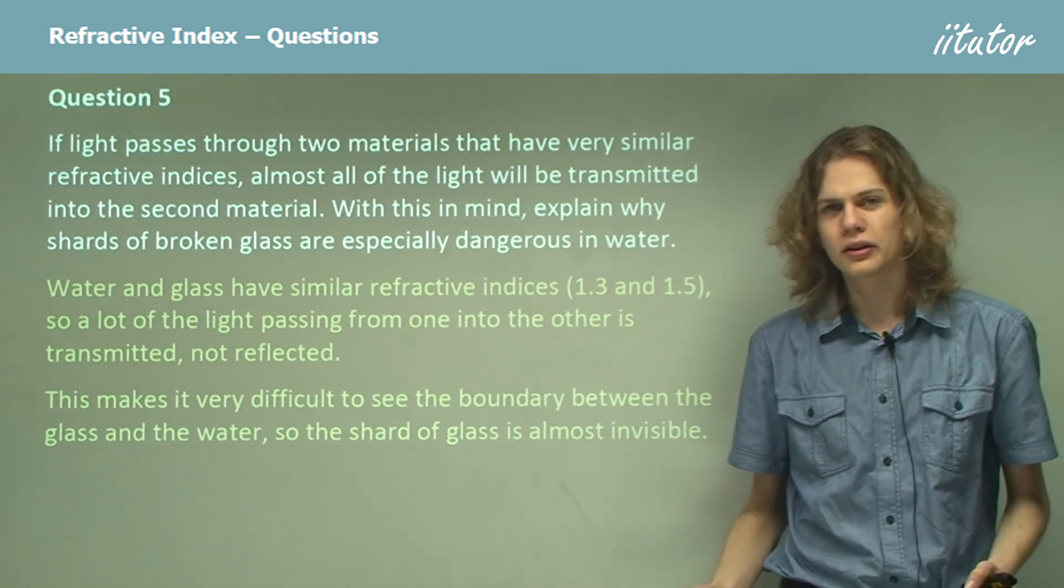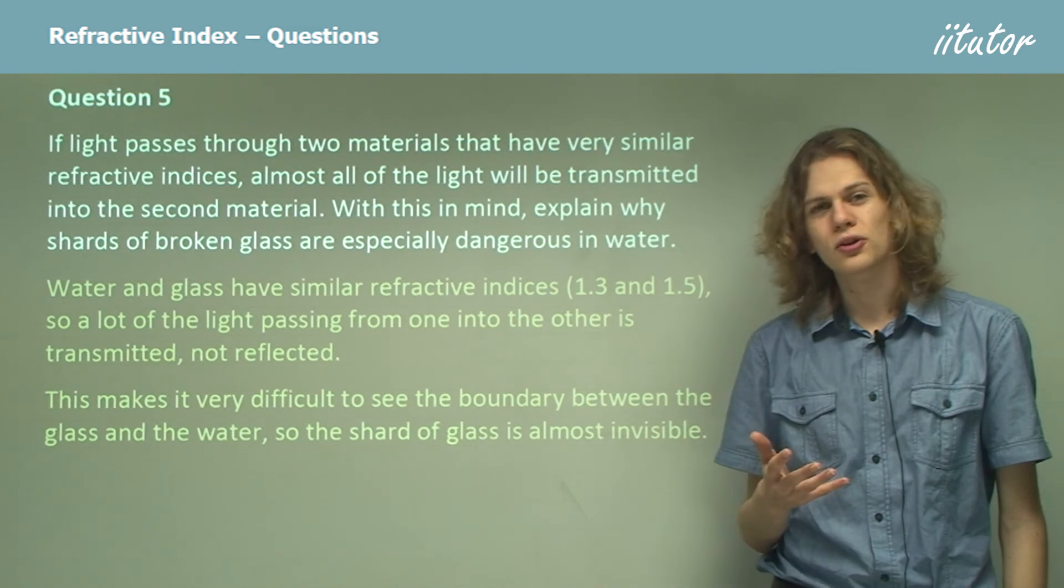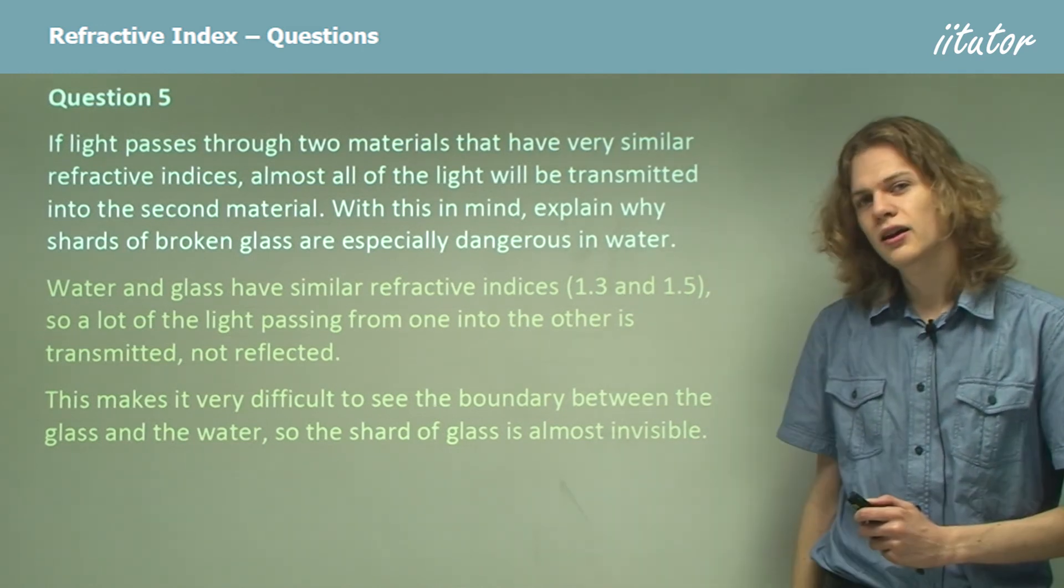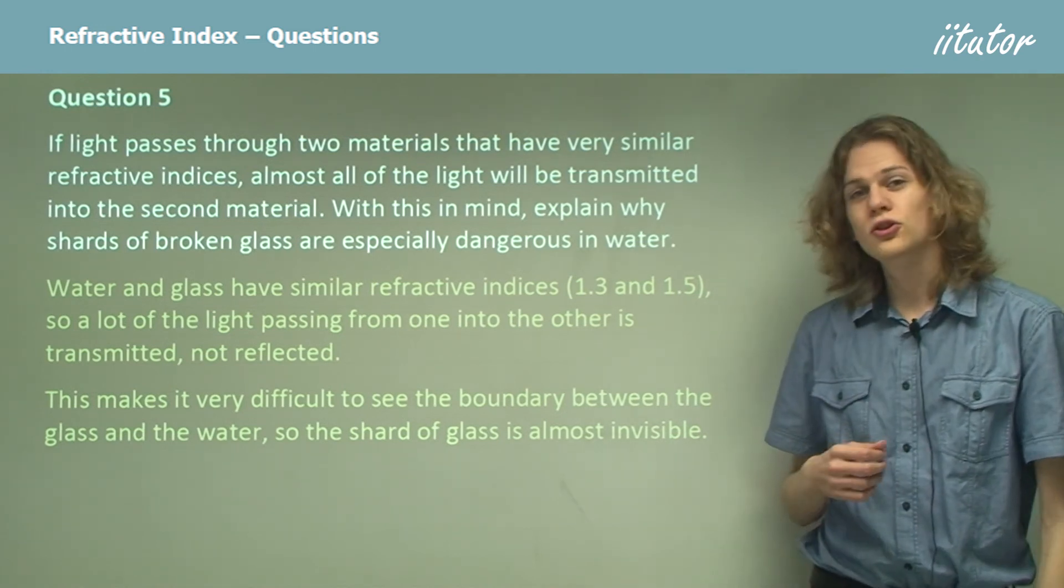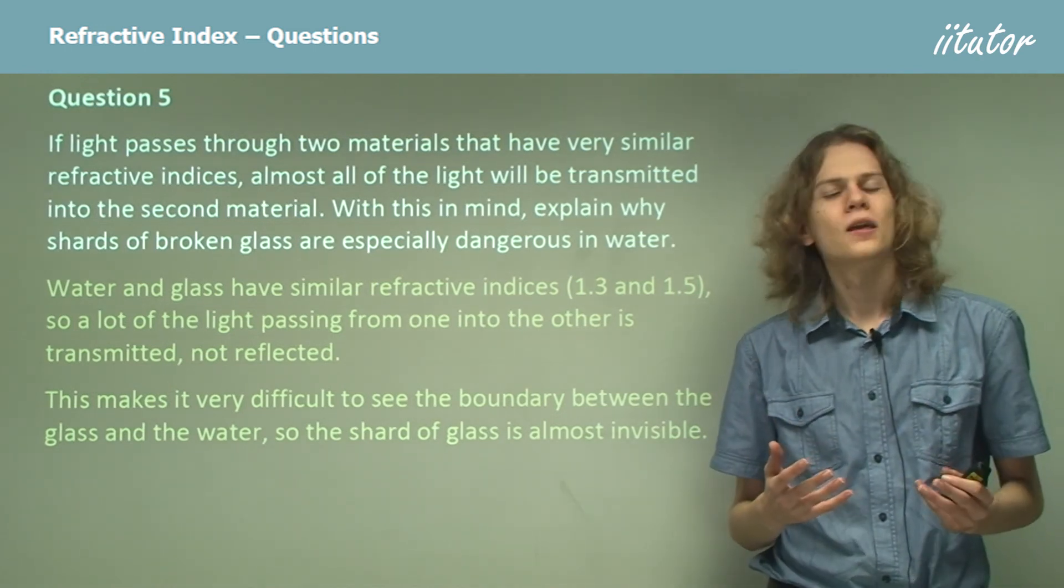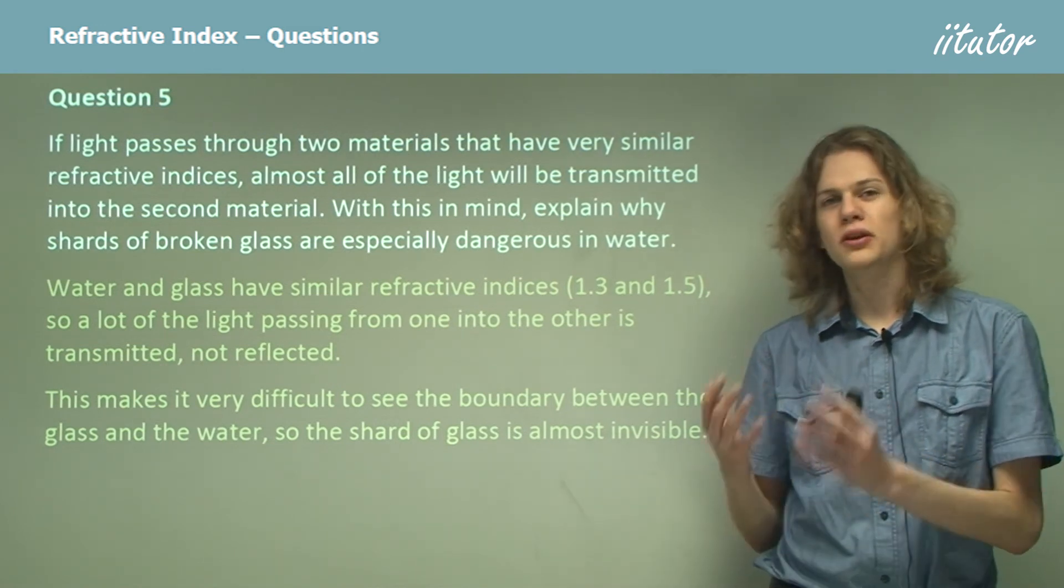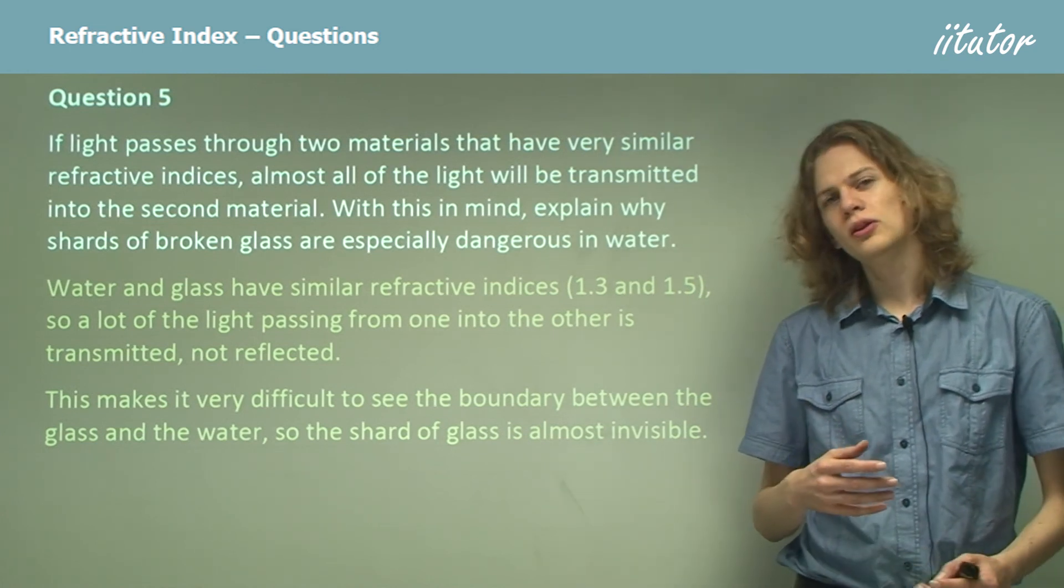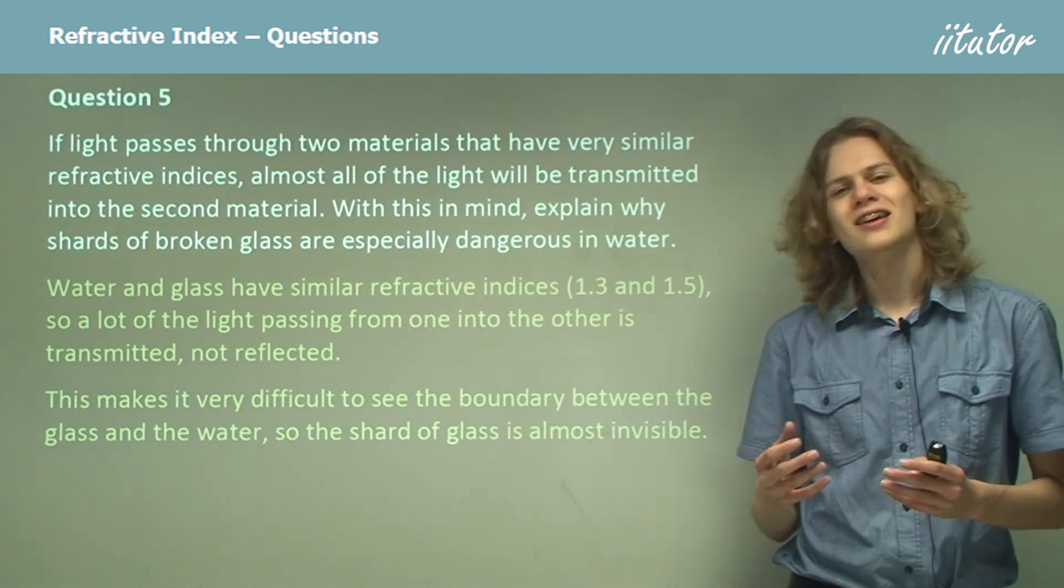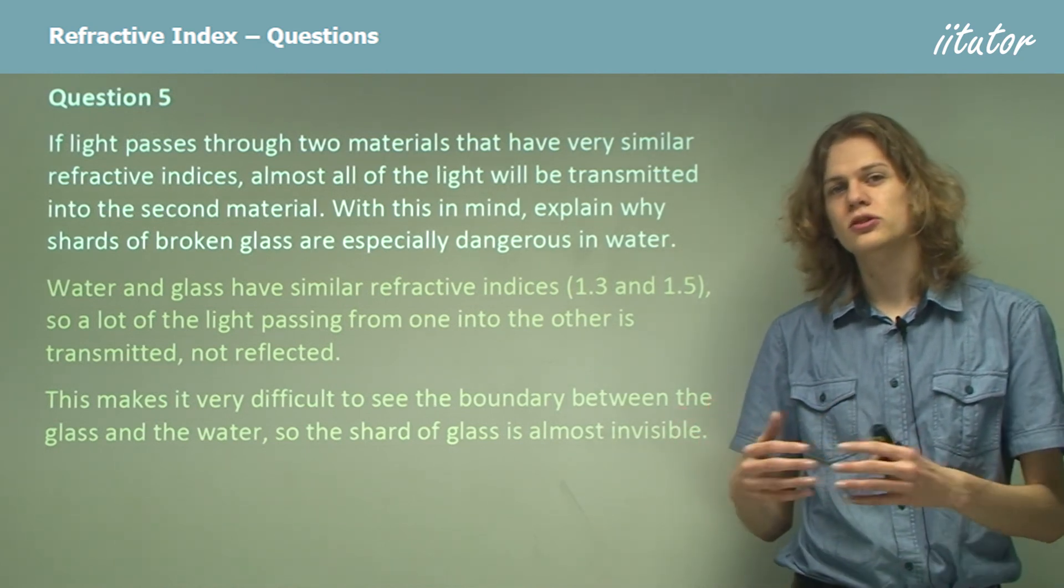And of course, if you're swimming in a swimming pool with broken glass in there, you won't see that broken glass until it goes through your foot. So that concludes the questions. We've gone through some of the uses of refractive indices and how they relate to the angle of refraction and to the speed of light in the material. In the next lesson, we're going to be looking at dispersion and how we can use prisms and refraction to divide white light into its different colors.